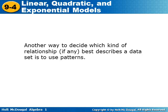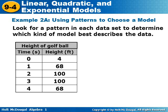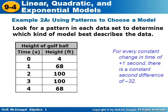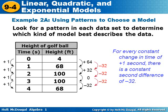Another way to decide which kind of relationship best describes a data set is to use patterns. Look for a pattern in each set of data to determine which kind of model best describes it. For every constant change in time of plus one second, there's a constant second difference of negative 32. You check that x changes by plus one each time, then check y: plus 64, plus 32, zero, and negative 32. The second differences are all negative 32, so the data appears to be quadratic.